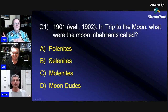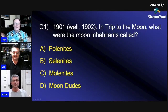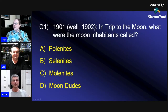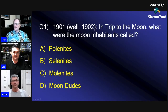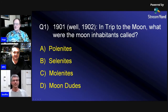The movie came out in 1902, but nothing else came in 1901, so we're just going to cheat the rules a little bit. In Trip to the Moon, what were the moon inhabitants called? Was it A, Polonites; B, Selenites; C, Molonites; or D, just moon dudes?